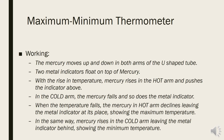Here is how a maximum minimum thermometer works. With the change of temperature, the mercury moves up and down in both arms of the U-shaped tube. Two metal indicators float on top of mercury. With the rise in temperature, mercury rises in the hot arm and pushes the indicator above. At the same time, in the cold arm, the mercury falls and so does the metal indicator. When the temperature falls, the mercury in the hot arm declines, leaving the metal indicator at its place, showing the maximum temperature. At the same time, the mercury rises in the cold arm, leaving the metal indicator behind, showing the minimum temperature.